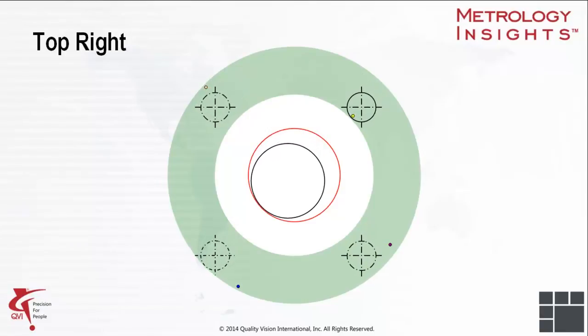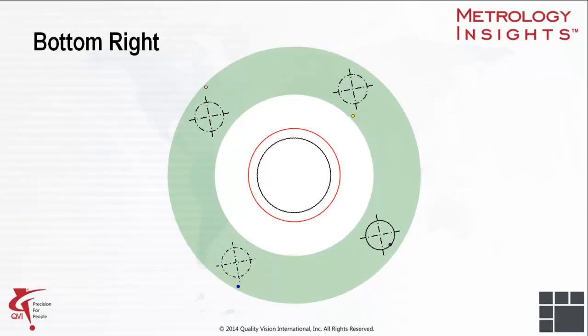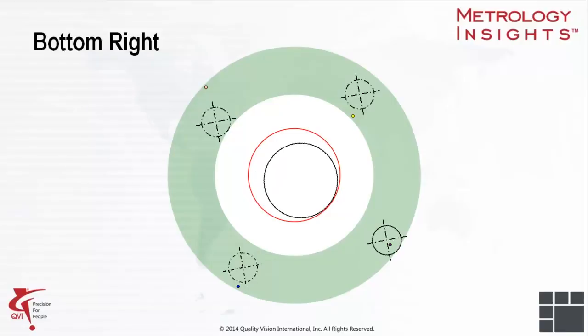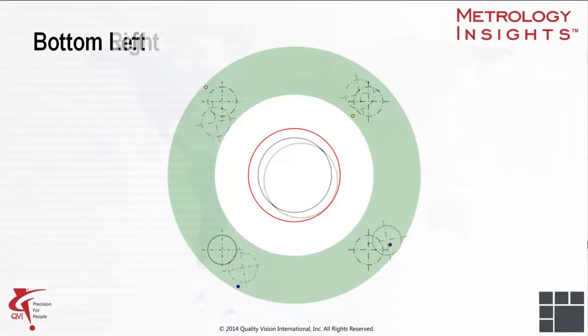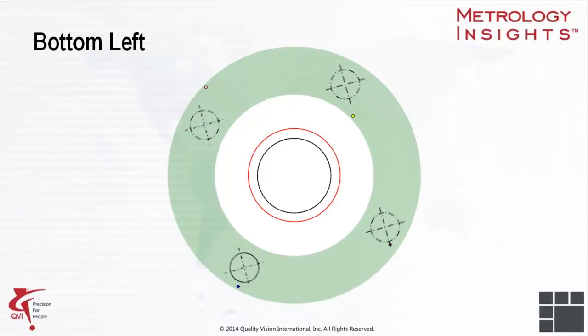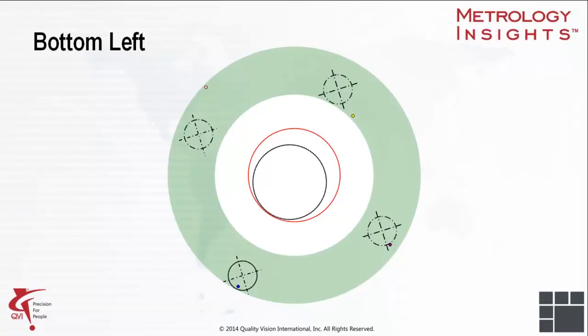Similarly, we can just translate the top right tolerance zone as much as we can in X and in Y, in order to bring the axis as close as possible to nominal. Again, all other axes are out of tolerance. To take care of the bottom right point, we could rotate the gauge and then translate it in X and Y. This would bring the point as close to nominal as possible. Similarly, the last axis point could be brought as close to nominal as possible by a rotation and a translation.